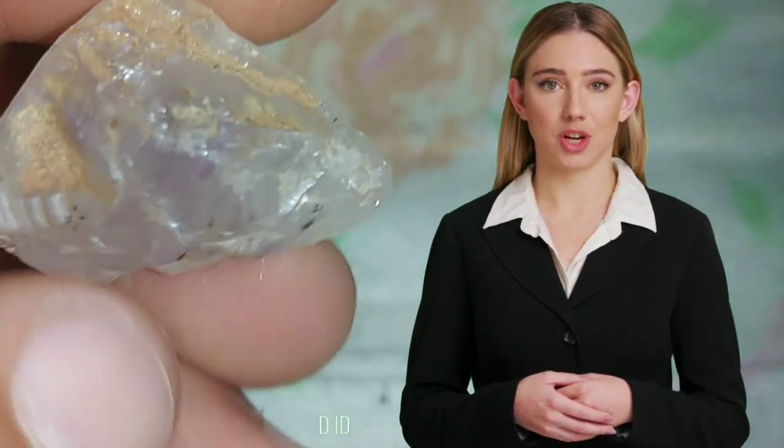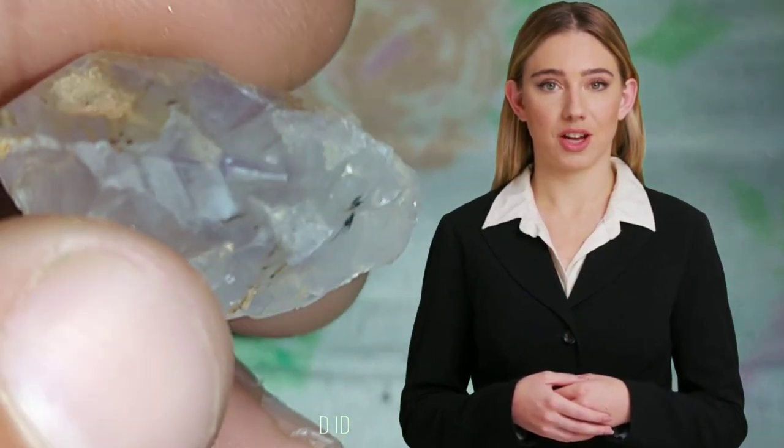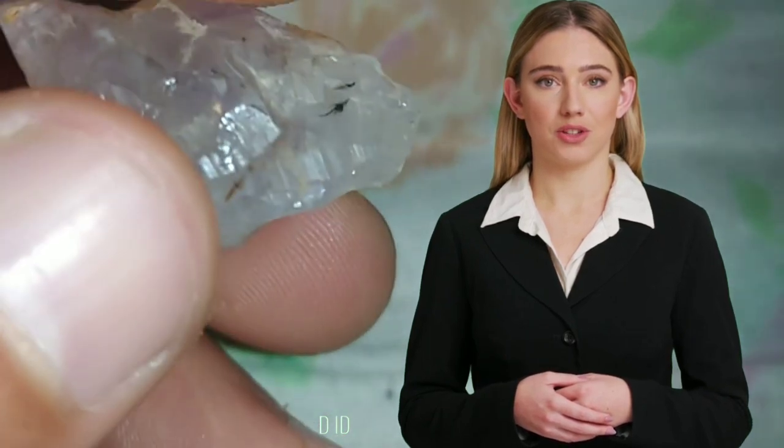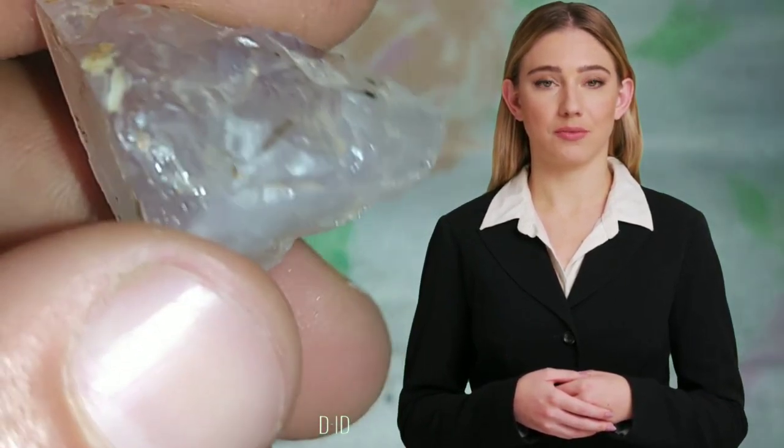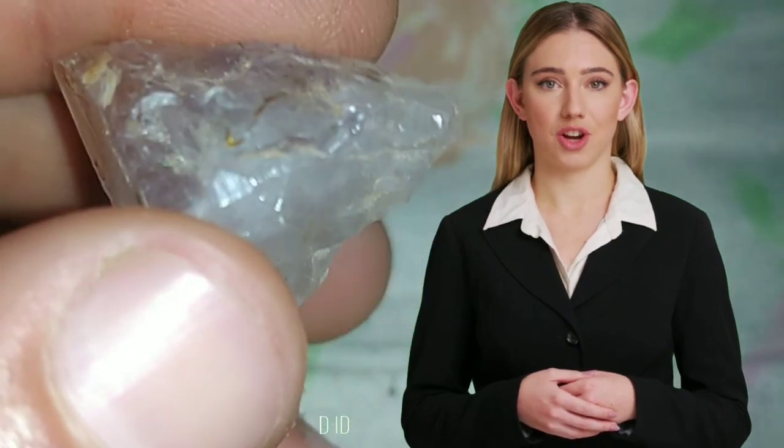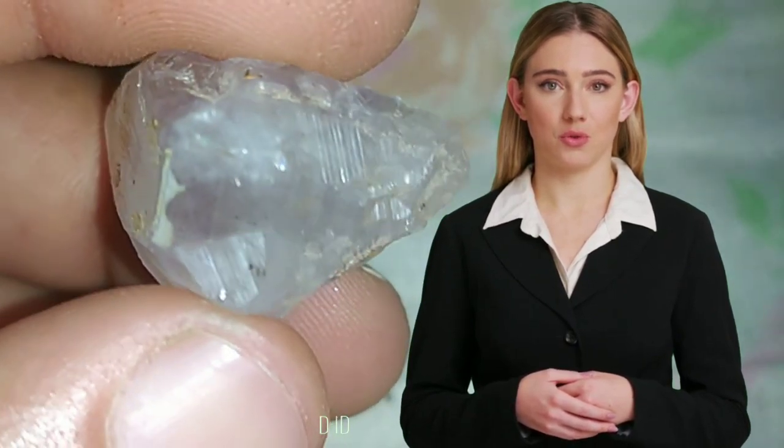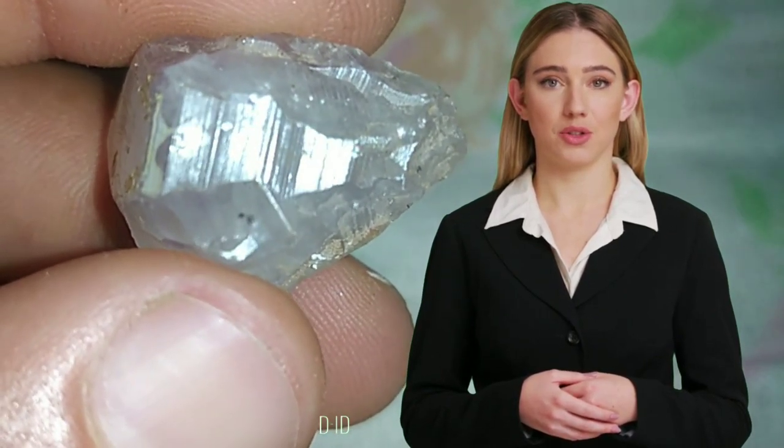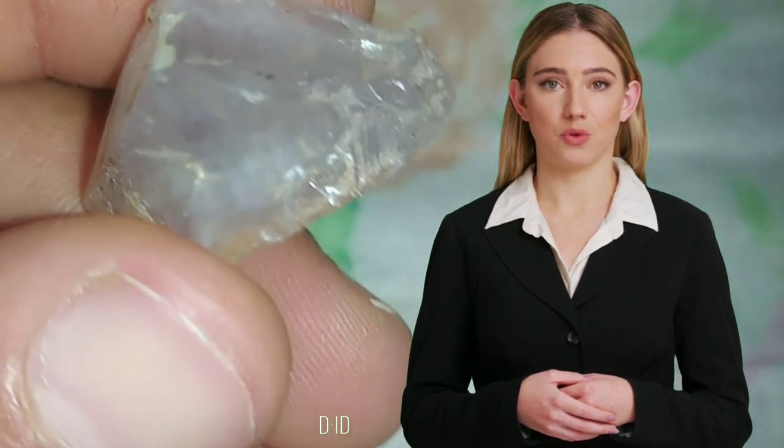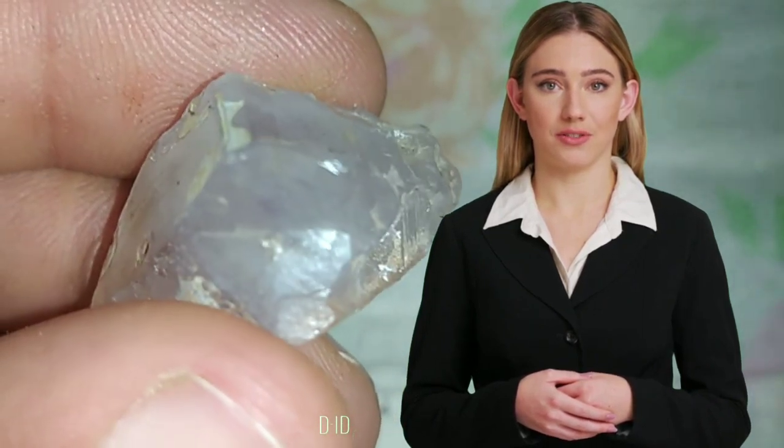Observe the diamond's shape and color. The first step in examining a rough diamond at home is to observe its overall shape and color. Rough diamonds can take various forms, such as octahedral, dodecahedral, or cubic shapes. Examine the crystal's facets to see if they are well-formed or if there are any irregularities.